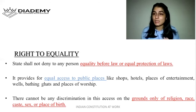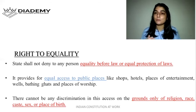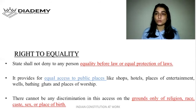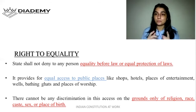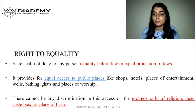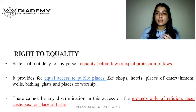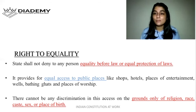In ancient times, lower caste people were not allowed to use certain wells. A more recent issue is the Sabarimala temple case, where women were not allowed to visit the temple — a place of worship — and discrimination was being done on the ground of sex. These kinds of discriminations are prohibited by Article 15.